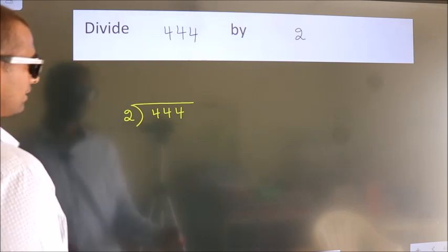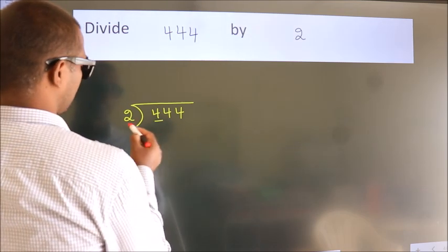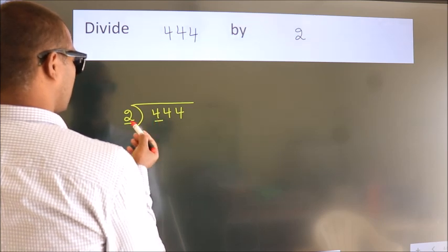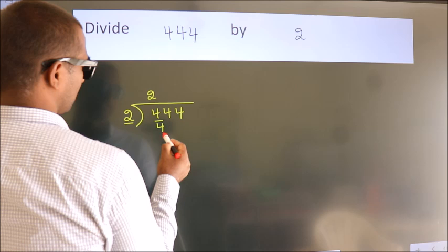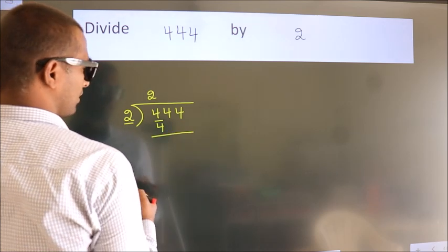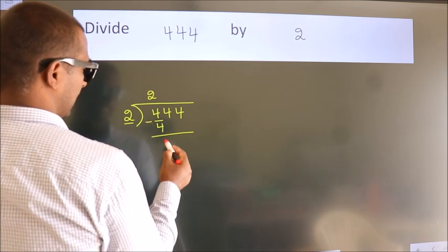Next, here we have 4, here 2. When do we get 4? 4 in 2 table, 2 twos, 4. Now we should subtract. We get 0.